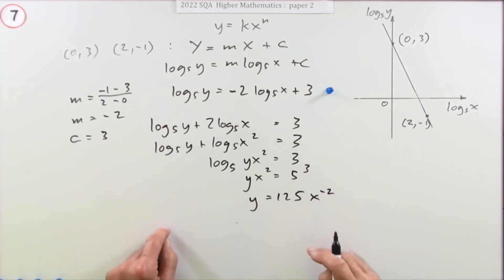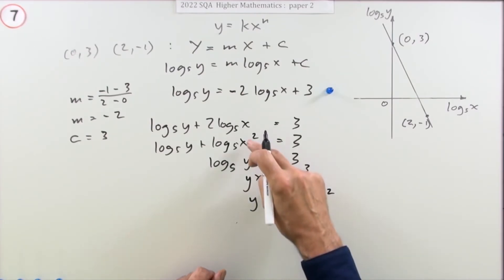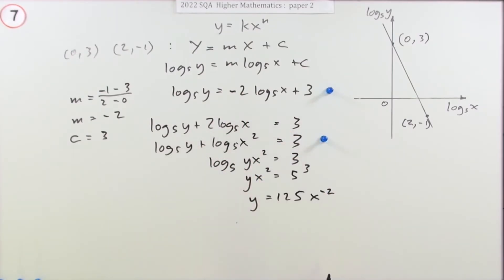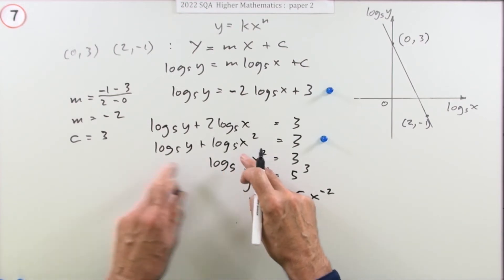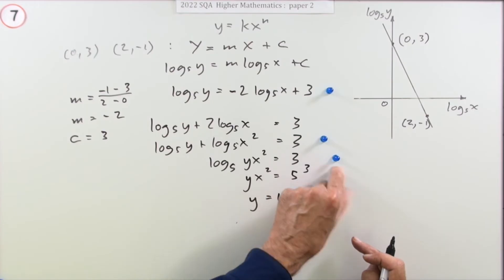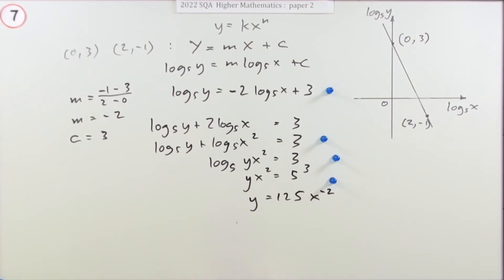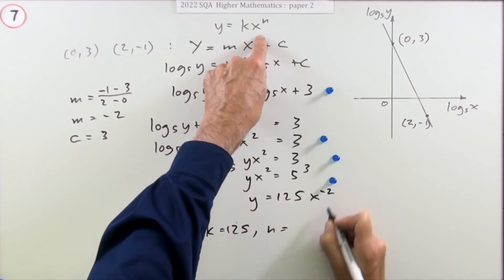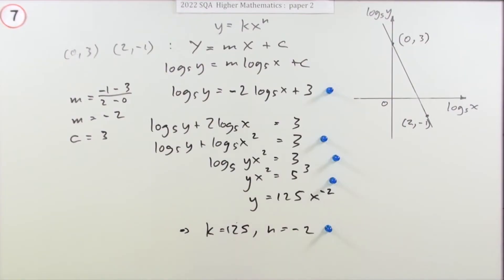Now the three marks in the middle here were just for using the various laws of logs. So popping the power inside was worth a mark. Using the fact that if you've got a product, it splits into the sum was worth a mark. And getting rid of the log by using the exponential was worth a mark. And the final marks for identifying the two parts. So you just compare that with the original. So that means that the k must be the 125. And the n must be the -2. Maybe I should have said here, compared with y equals kx to the n, means that the k is the 125 and the n is the -2.